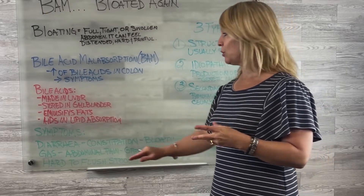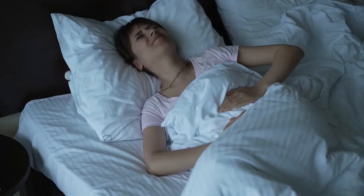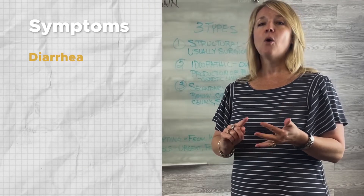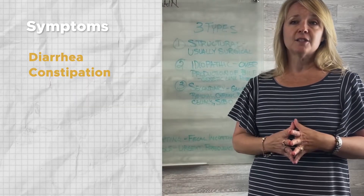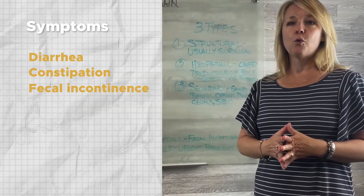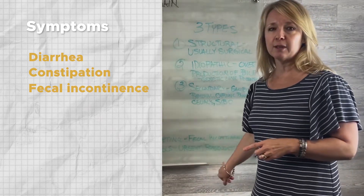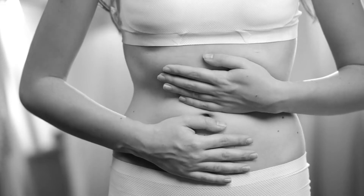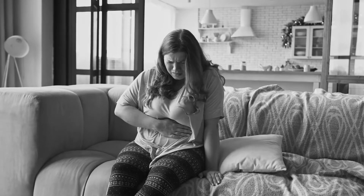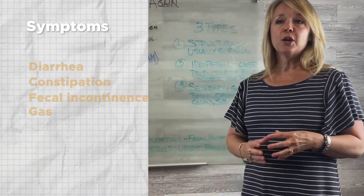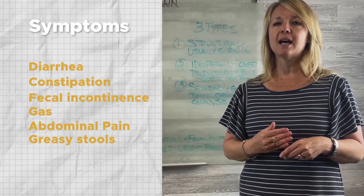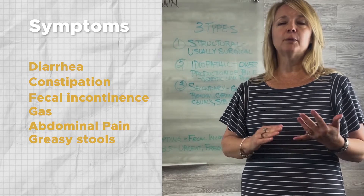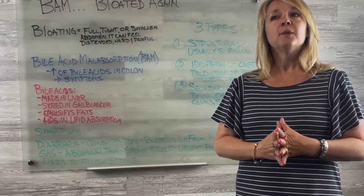The symptoms of bile acid malabsorption include diarrhea or constipation, bloating, fecal incontinence — meaning you don't have control over your bowel movements and they hit you very urgently and frequently — gas, abdominal pain with that painful hard bloated swollen abdomen, greasy stools, and stools that are sometimes hard to flush. Those are some very common symptoms of bile acid malabsorption.